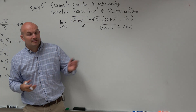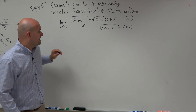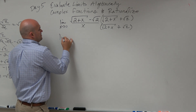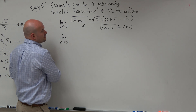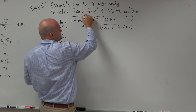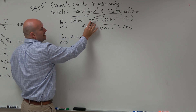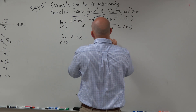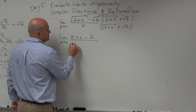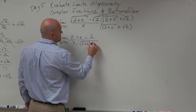We want to make sure we rationalize both radicals, so you've got to make sure you include both of them. What you're trying to do is create a difference of two squares in each case. So once we complete that: square root of 2 plus x times square root of 2 plus x — remember with difference of two squares we only need to multiply the first and last two terms — that gives me 2 plus x, and then minus square root of 2 times square root of 2, which is the square root of 4, which is just 2, all over x times the square root of 2 plus x plus the square root of 2.